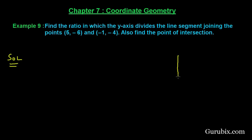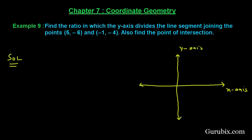First of all, we shall draw the coordinate axes — this is the y-axis and this is the x-axis. We are given that the y-axis divides the line segment joining the points (5, -6) and (-1, -4). Suppose point P is (5, -6) and point Q is (-1, -4).